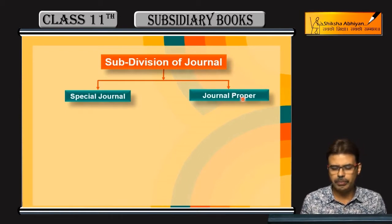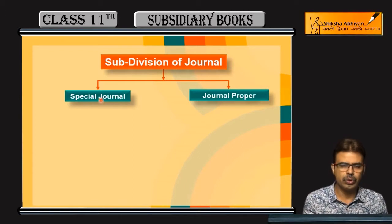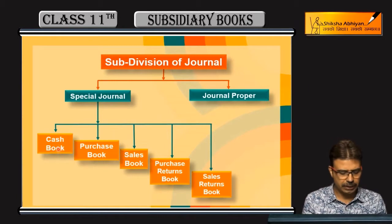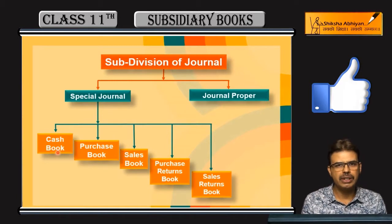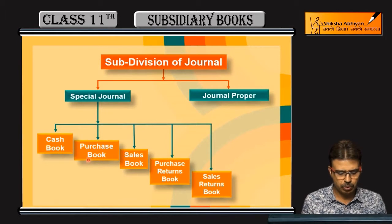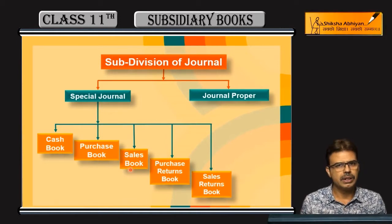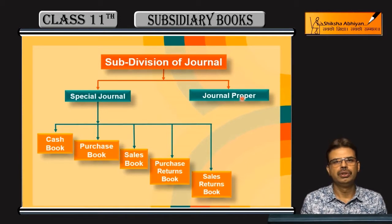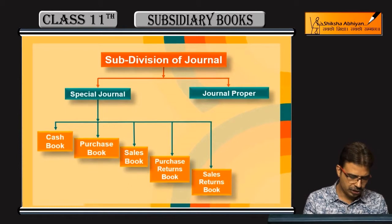We will come to the journal proper, but there are special journals for which we have made a special place. The cash book covers all cash transactions — receipts and payments. The purchase book covers credit purchases of goods. The sales book covers credit sales of goods. The purchase return book covers purchase returns, and the sales return book covers sales returns. The rest of the transactions will come to the journal proper.